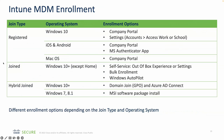With Intune MDM enrollment, depending on the join type and OS, there are different enrollment options. For the Registered type on Windows 10, there's the Company Portal app or manual enrollment via Settings > Accounts > Access Work or School. For iOS and Android, Company Portal or the Microsoft Authenticator app can be used. For macOS, it's just Company Portal.